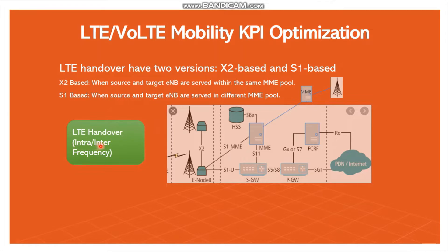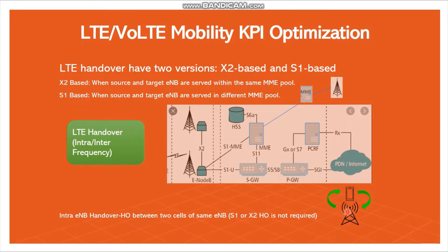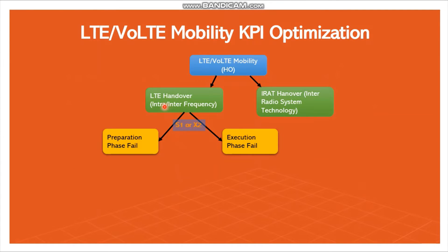Either inter frequency or intra frequency handover — both cases come under X2 or S1 interface. If handover occurs between sectors of the same site, it is called intra eNodeB handover. Here S1 or X2 interface is not required. Both intra and inter frequency handovers based on S1 or X2 can fail under the preparation phase or the execution phase.